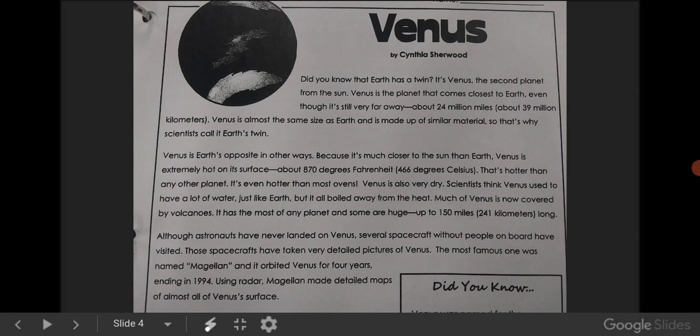Venus is almost the same size as Earth and is made up of similar material. So that's why scientists call it Earth's twin.